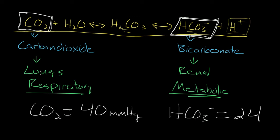CO2 is controlled by the lungs, or respiration, and respiratory disorders primarily affect CO2 to cause acid-base disorders. On the other hand, bicarbonate is controlled by the kidneys, and primarily metabolic disorders change your bicarbonate value to cause acid-base disorders. It's important to know the normal values: the normal CO2 value is around 40, and the normal bicarbonate value is around 24. Having these values memorized will allow you to easily recognize when they are abnormally elevated or low, and to recognize different primary processes in acid-base disorders.